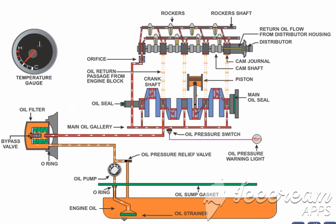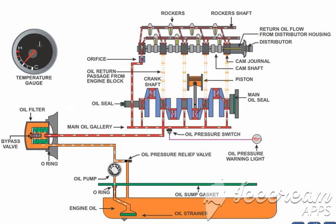Big end bearings have small openings through which the pressurized oil is splashed intermittently towards the piston gudgeon pin and cylinder walls. Oil flowing towards the cylinder head passes through a small orifice, which increases its speed and reduces the pressure.